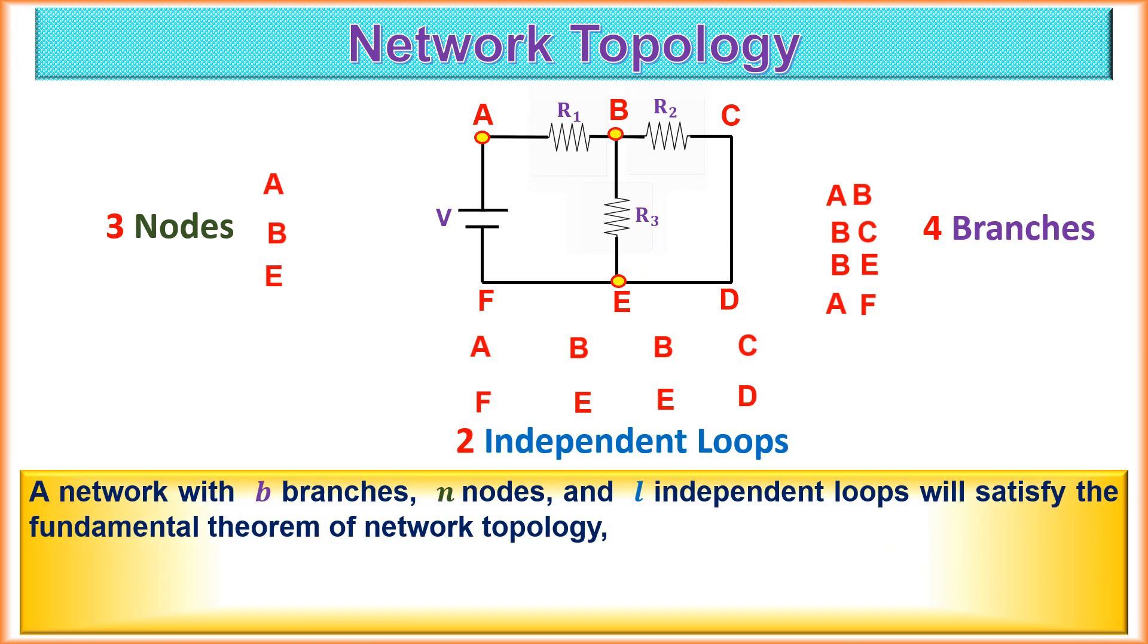A network with b branches, n nodes, and l independent loops will satisfy the fundamental theorem of network topology given by b equals l plus n minus 1. The network shown here has 3 nodes, 4 branches and 2 independent loops and hence it satisfies the network topology: 4 equals 2 plus 3 minus 1 which equals 4.